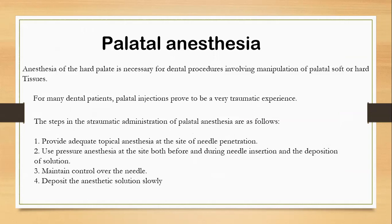Now we deal with palatal anesthesia. We have covered the PSA, MSA, and ASA/infraorbital nerve blocks on the buccal side. Now, how do we anesthetize the palatal roots? Anesthesia of the hard palate is necessary for dental procedures involving manipulation of the palatal soft or hard tissues. For many dental patients, palatal injections are a traumatic experience. Steps for atraumatic administration: provide topical anesthesia at the needle penetration site, use pressure anesthesia before and during insertion, and deposit anesthetic solution very slowly.